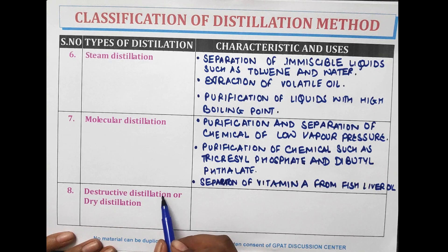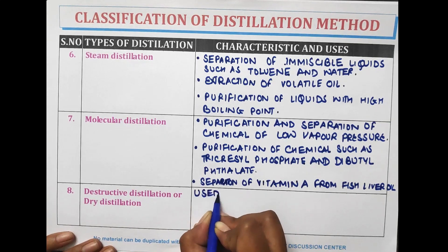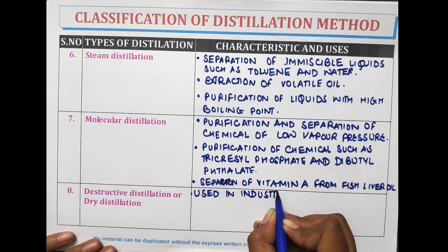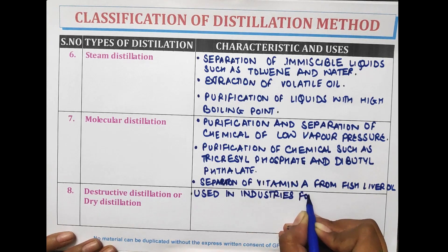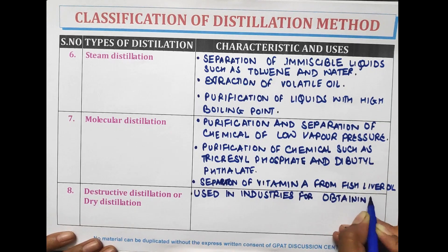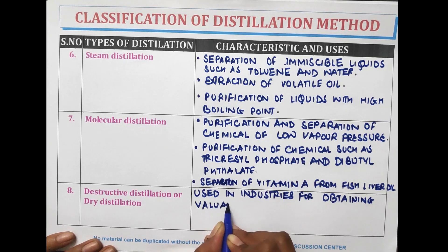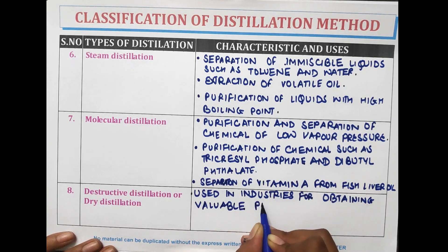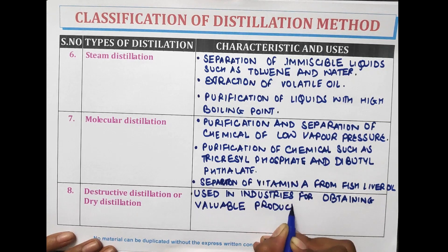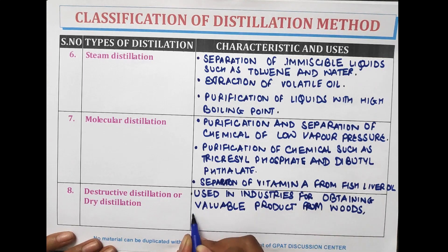Destructive distillation, also known as dry distillation, is used in industries for obtaining valuable products from wood or coal.